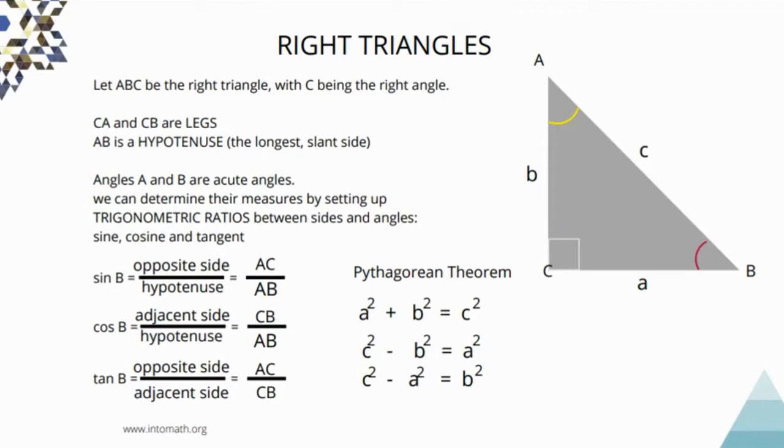You know from previous grades that you can always use the Pythagorean theorem in the right angle triangle when you know two sides and you're trying to find the third side. But what if you are trying to find one of the angles knowing the two side lengths or trying to find one of the sides given one of the angles and one of the sides.